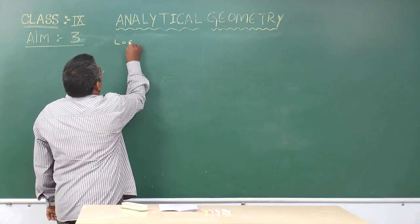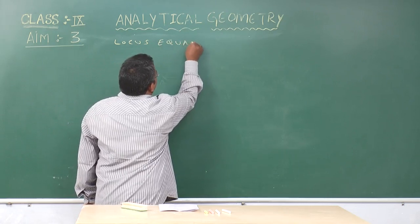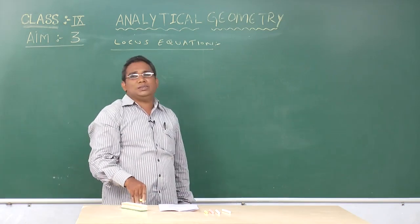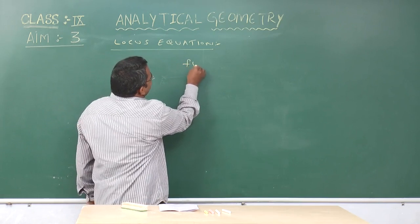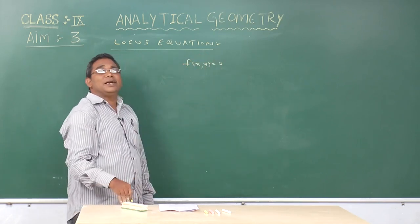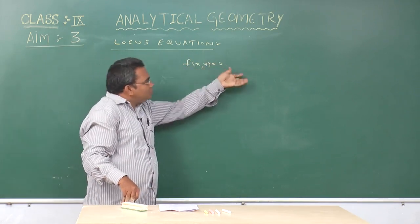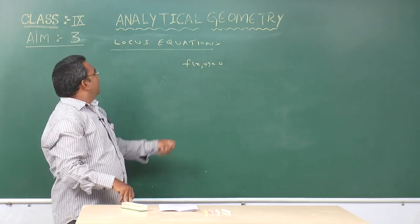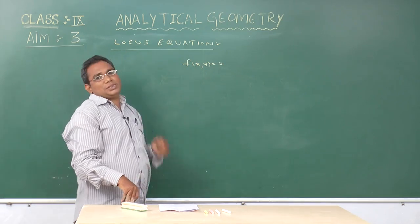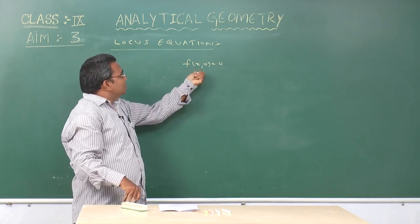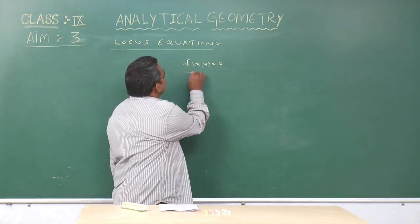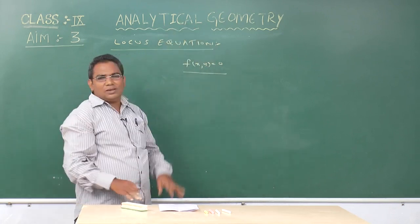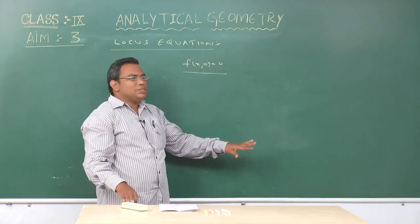Now we say about the locus equation. If every point in the locus satisfies the equation f(x, y) = 0, then that equation is called the locus equation. In analytical geometry, we represent the locus as an equation. If every point in the locus satisfies f(x, y) = 0, then f(x, y) = 0 is called the locus equation.